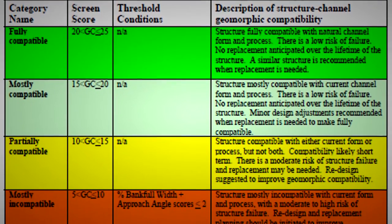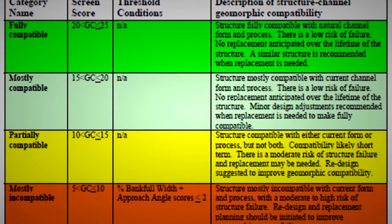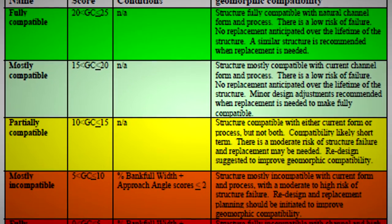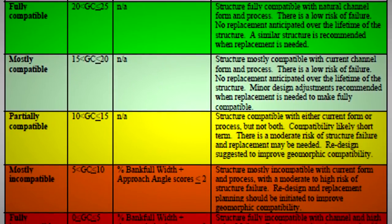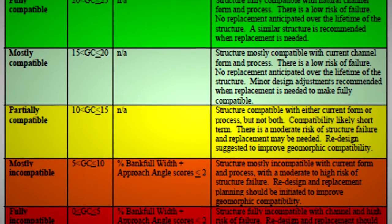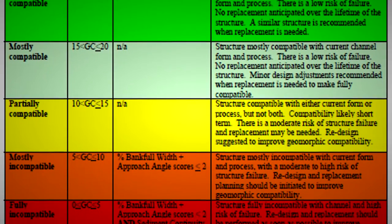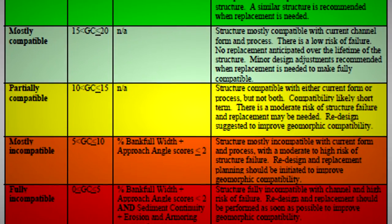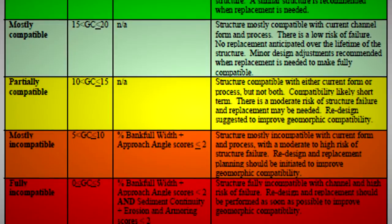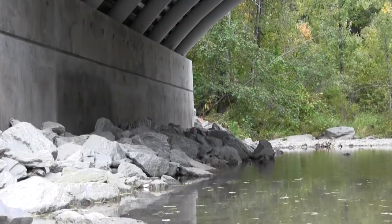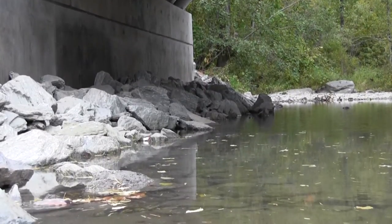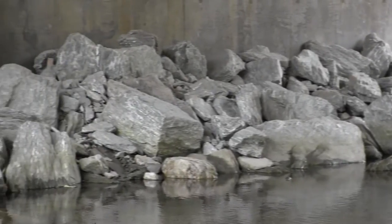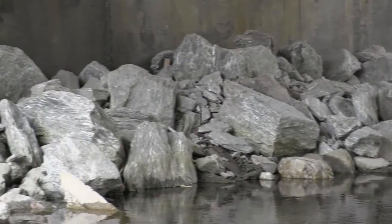We come out with a geomorphic compatibility rating, which describes different scoring possibilities — from fully compatible, where the structure is fully compatible with stream processes, to fully incompatible in the red, where the structure should be replaced as soon as possible. This gives structure managers something they can use in their list of considerations when they prioritize structure replacement, maintenance, or other maintenance work.